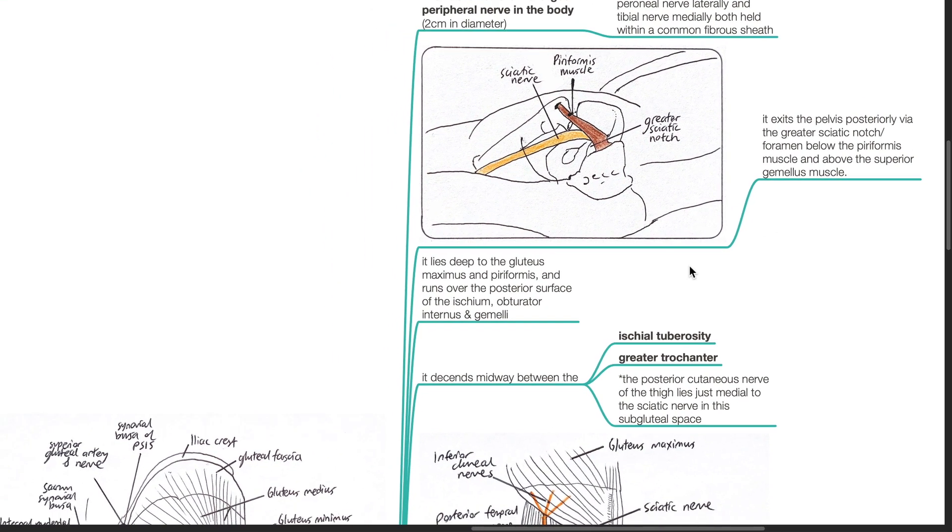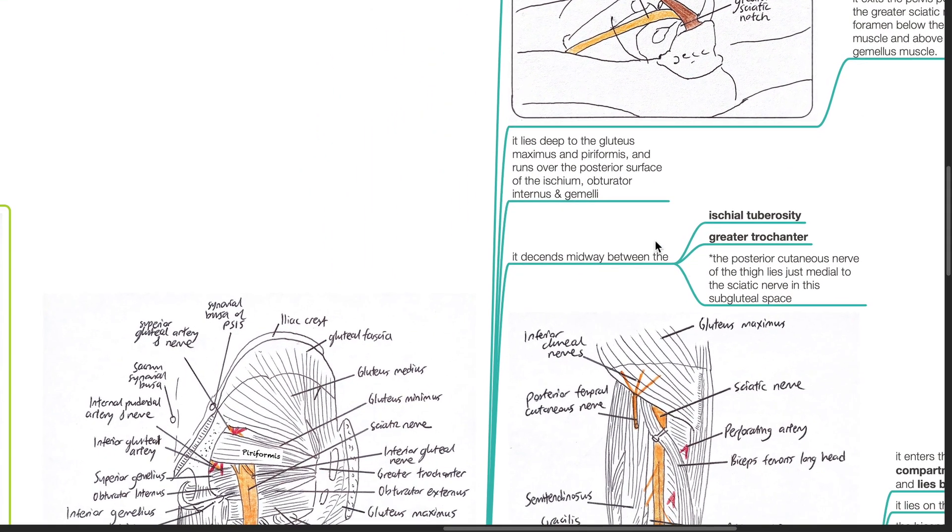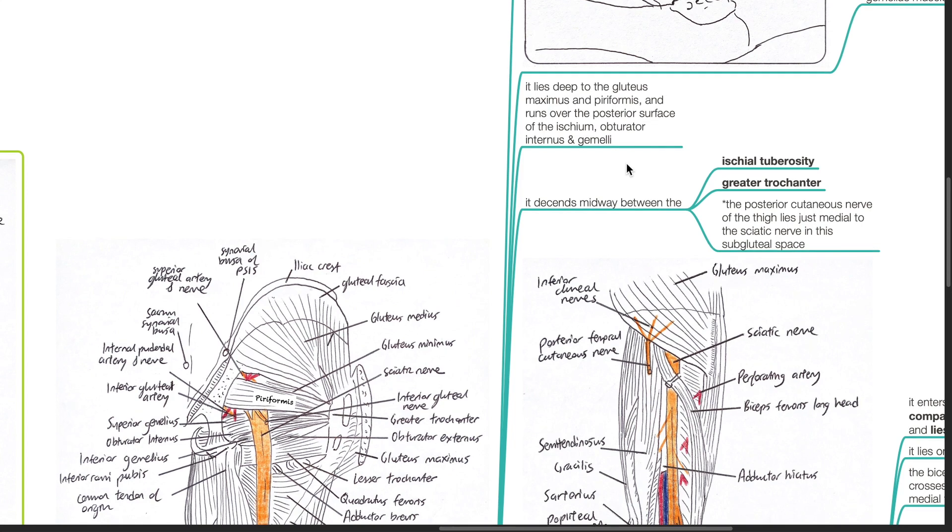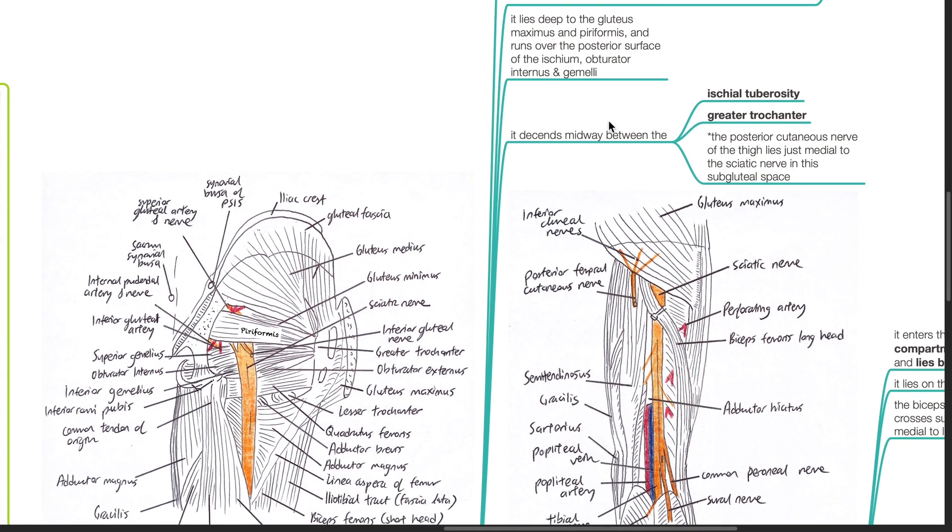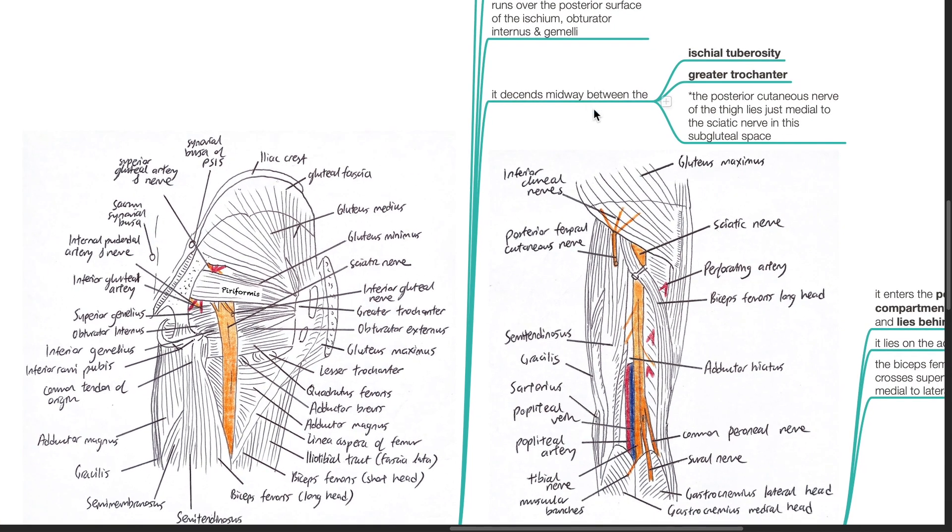It lies deep to the gluteus maximus and piriformis and runs over the posterior surface of the ischium, obturator internus and gameli. It descends midway between the ischial tuberosity and the greater trochanter.